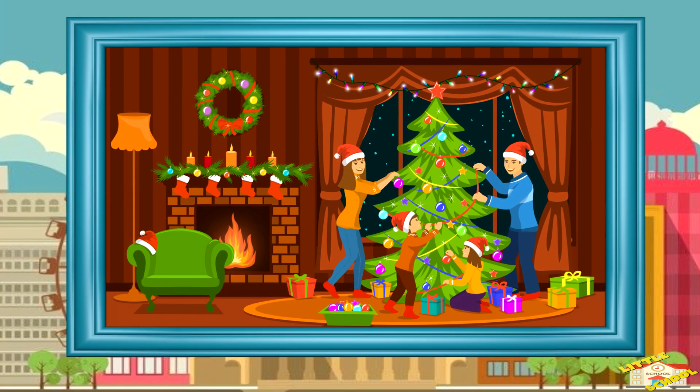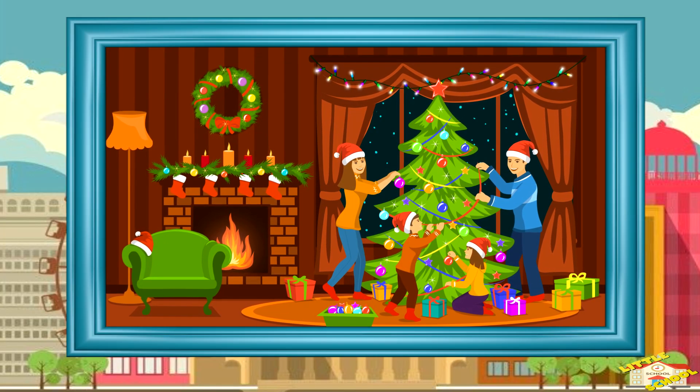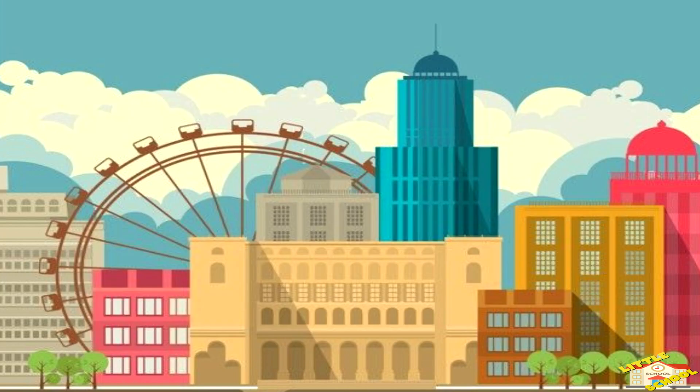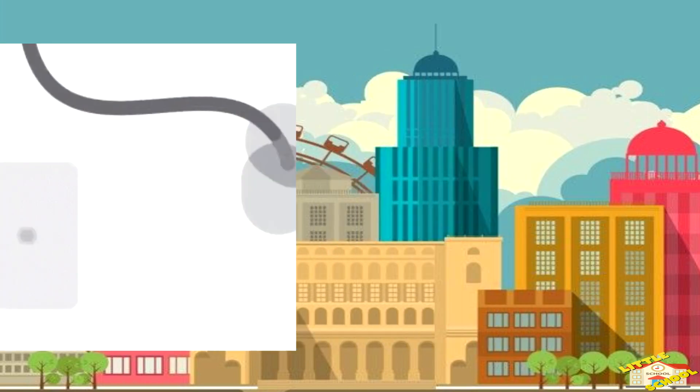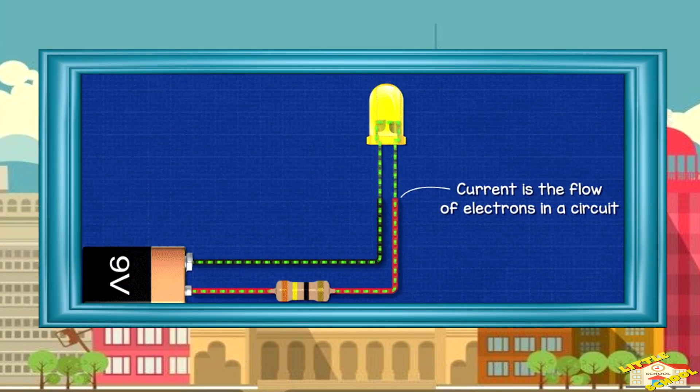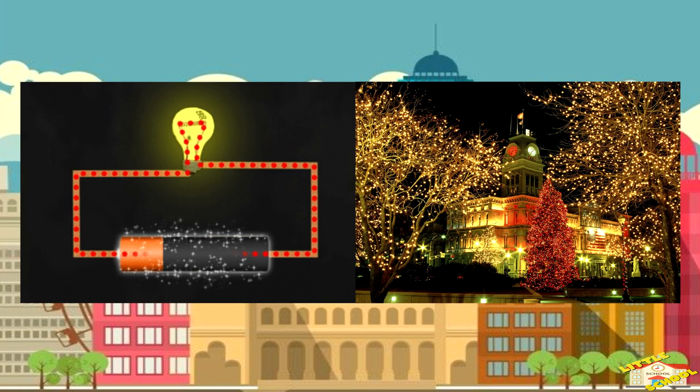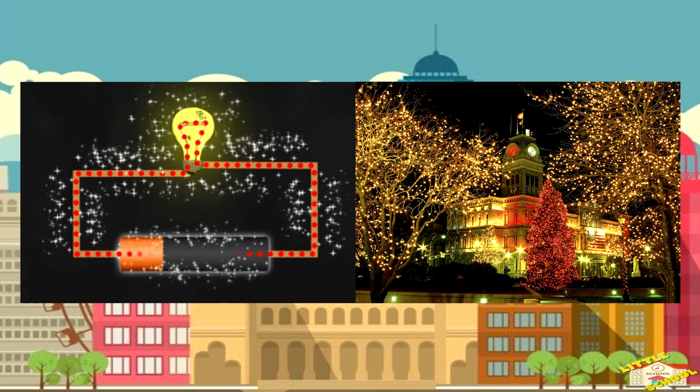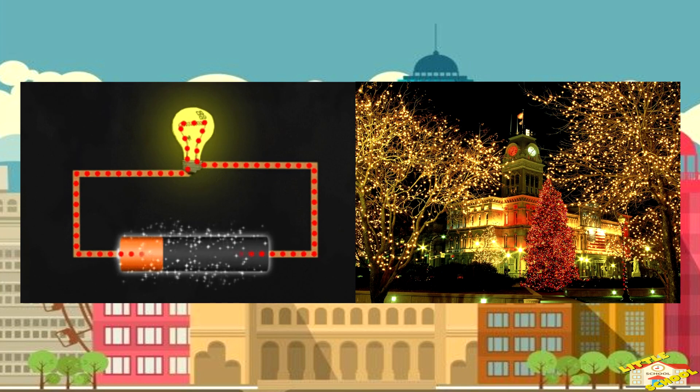Remember when your dad or mom set up the holiday lights on Christmas? When you plug the lights in, the electricity flows through the wires, making the little bulbs light up. It's like the electrons are passing the energy along, and voila, you get beautiful twinkling lights.